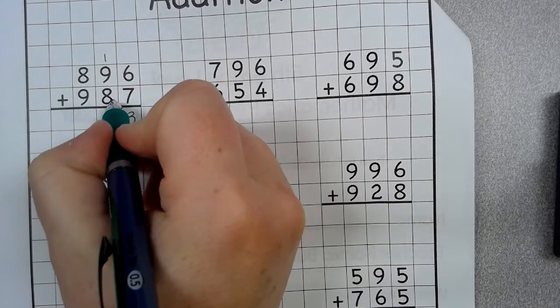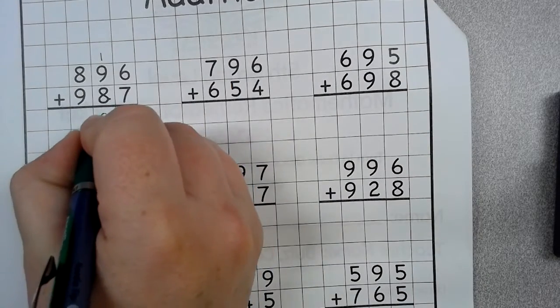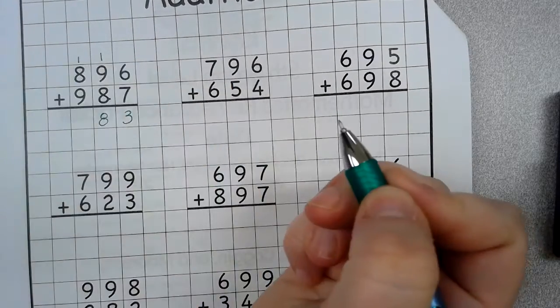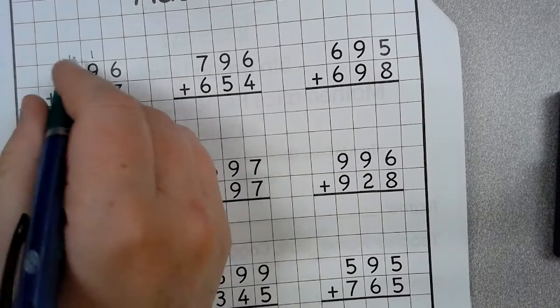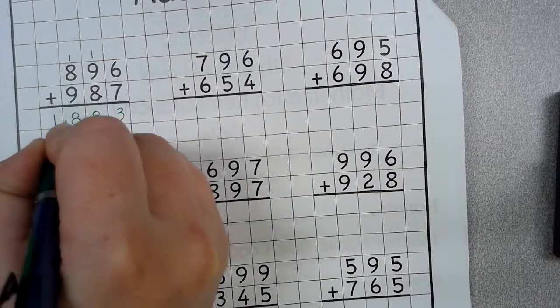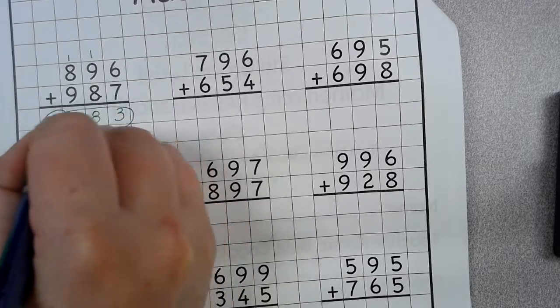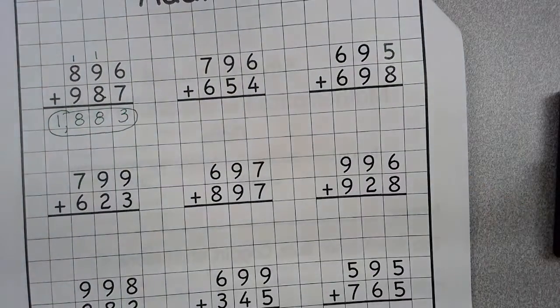9 plus 8 is 17, plus 1 is 18, carry your 1. 8 plus 9 is 17, plus 1 is 18. So, 1,883. All you got to do.